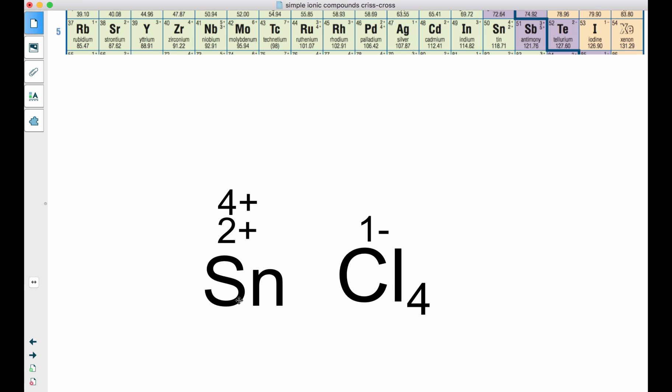So here's how this works. I have tin. It could be a 2+ or it could be a 4+. We know the chlorine is a 1-. Now, we actually have 4 chlorines. So if I have 4 chlorines and each one of them is a 1-, that means we're going to have an overall charge of 4-.